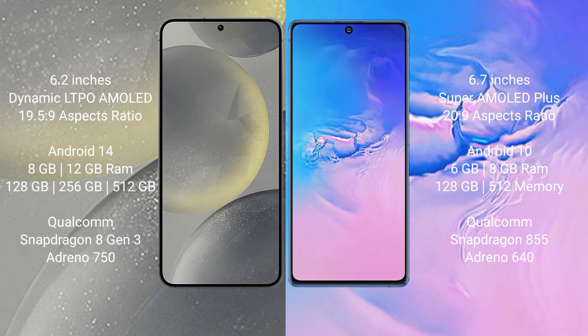Samsung Galaxy S24 runs on the Android 14 operating system. Samsung Galaxy S10 Lite runs on the Android 10 operating system. Samsung Galaxy S24 comes with 8GB or 12GB RAM and 128GB, 256GB, or 512GB internal storage, with a Qualcomm Snapdragon 8 Gen 3 processor and GPU Adreno 750.